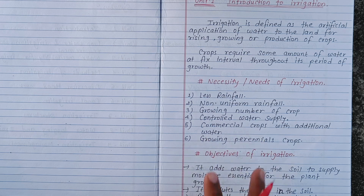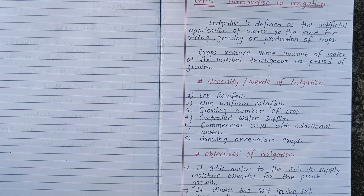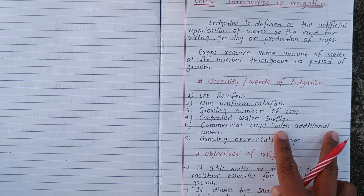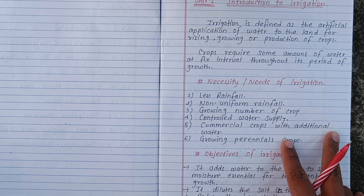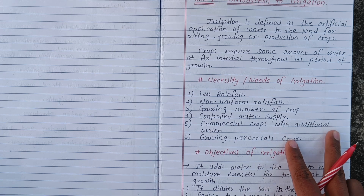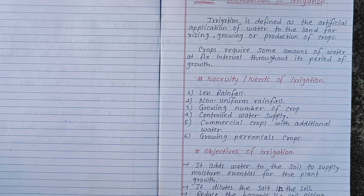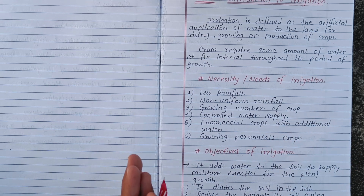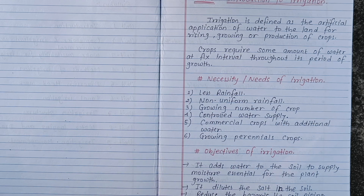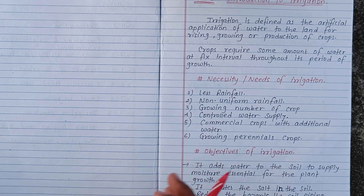Due to non-uniform rainfall, there are different types of crops, so you can also add additional water. If you want to add additional water, you can do so to supplement the rainfall.